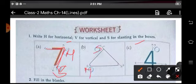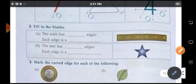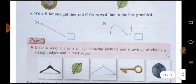So in this way do the sums. Fill in the blanks, the scale has dash edges. Each edge has a dash. The star has children. You have already done in the exercises. So do it yourself children.